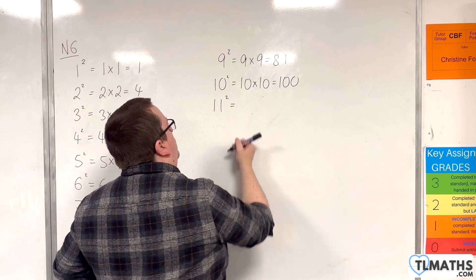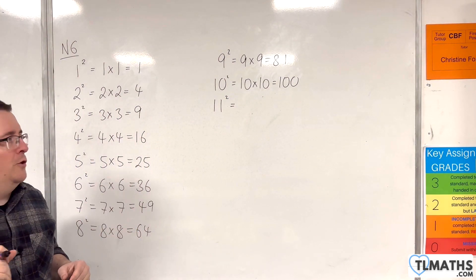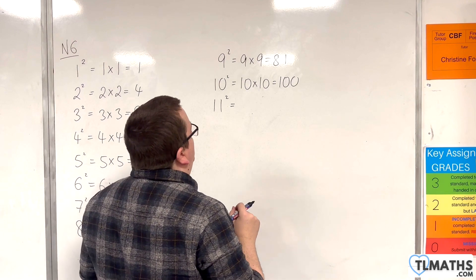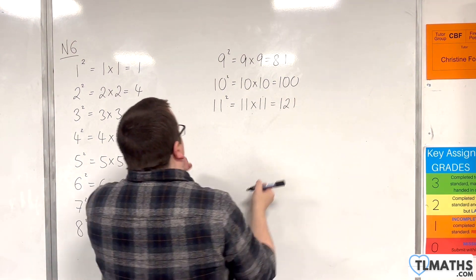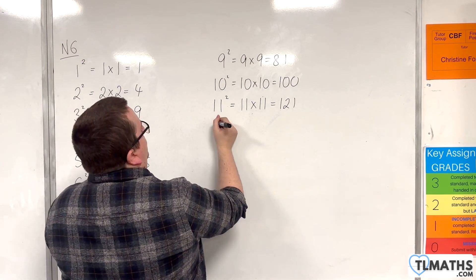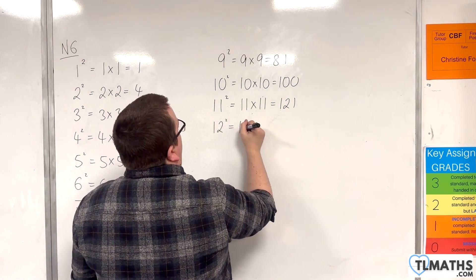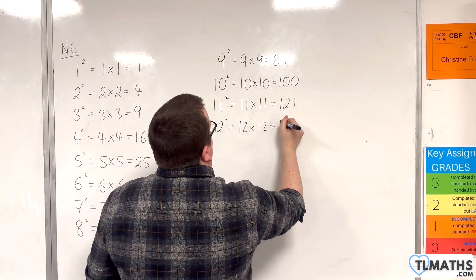Now, from here on, this is where some people start to get a little bit more foggy as to remembering them. So 11 squared is 11 times 11, which is 121. We have 12 squared, which is 12 times 12, so 144.